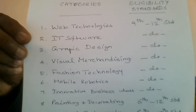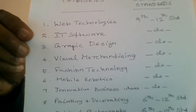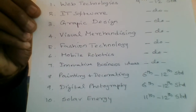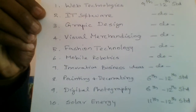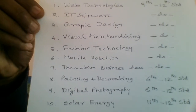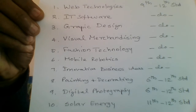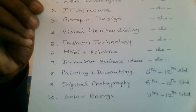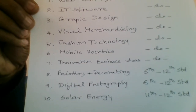Painting and decoration and digital photography are two categories open to all students from 6th to 12th standard. Solar energy is a category meant only for 11th and 12th standard students.